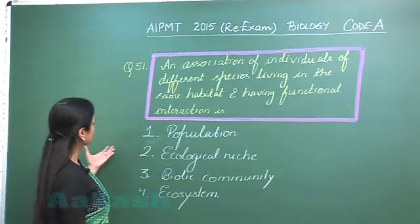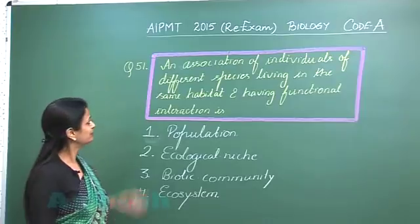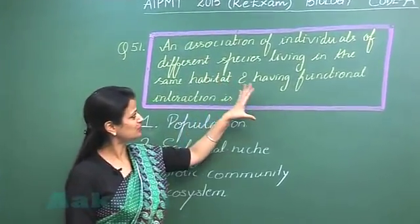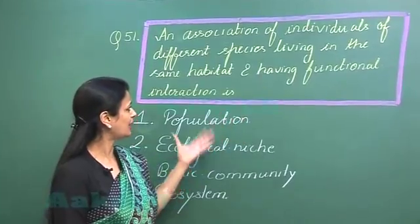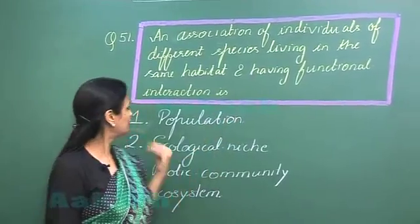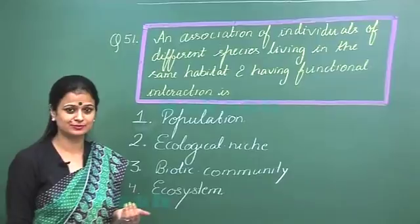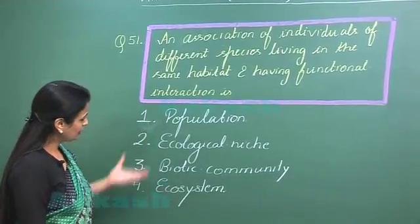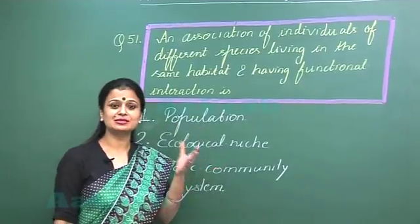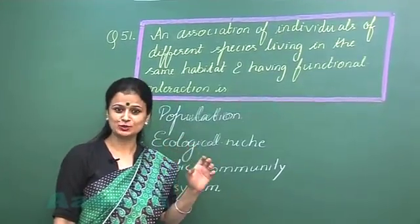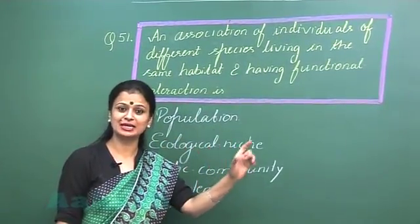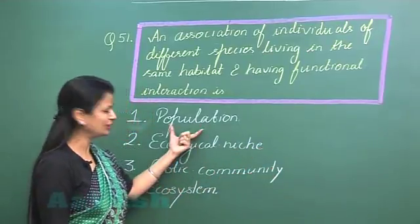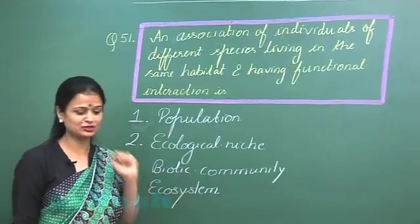Now let's discuss question number 51: An association of individuals of different species living in the same habitat and having functional interaction is? Now, population — you know that it is a group of individuals which belong to the same species living in a specific area. So here we are talking about a single species.